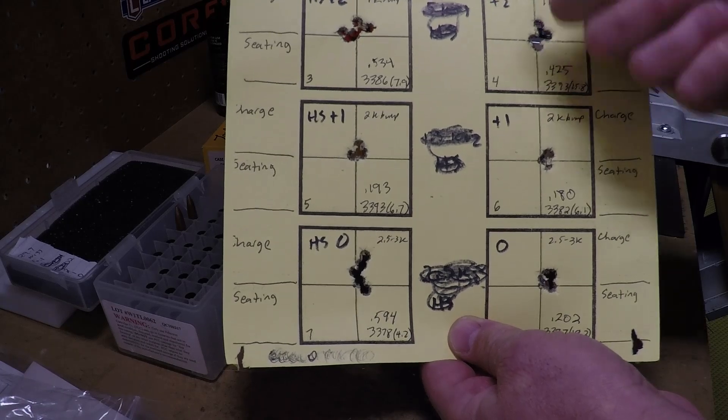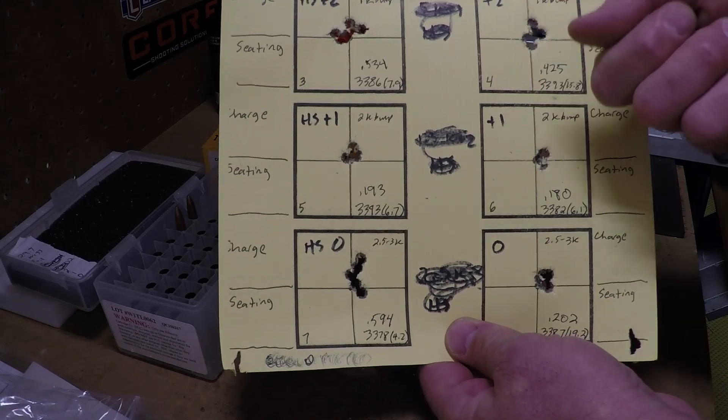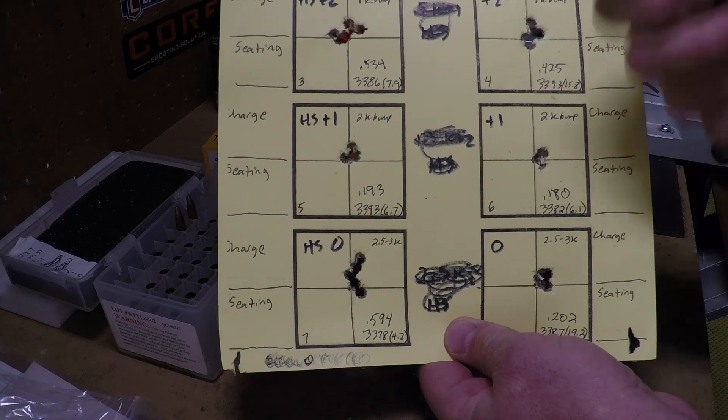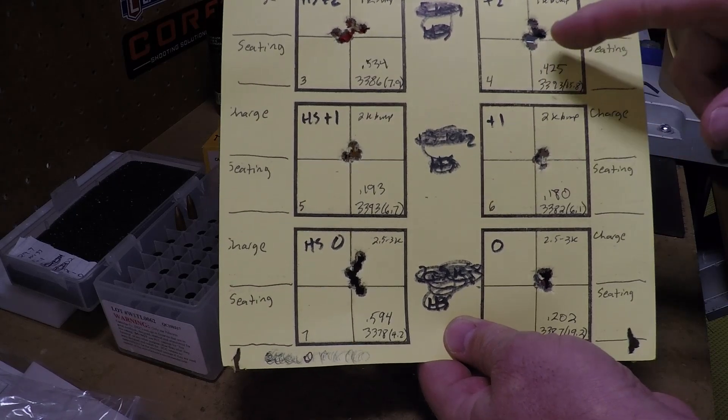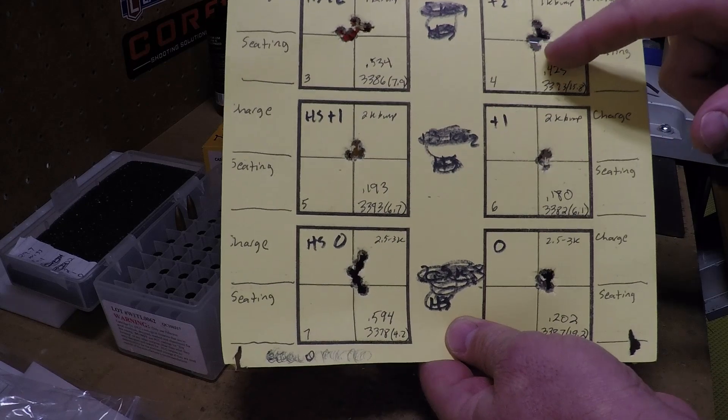You can tell, too, when you're cranking down the bolt, it's a little bit difficult to crank the bolt down. It's definitely a heavy bolt close. They would call this a hard crushed fit.